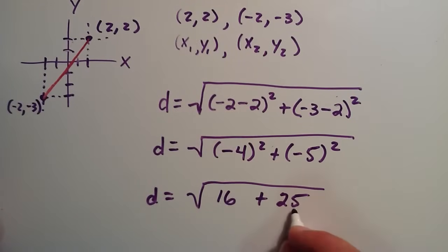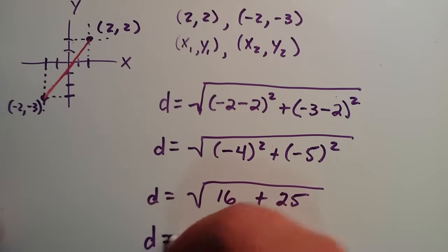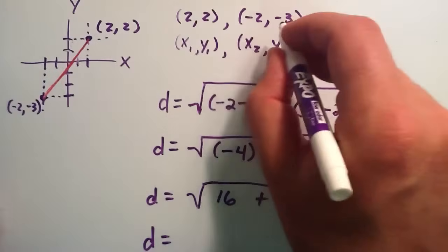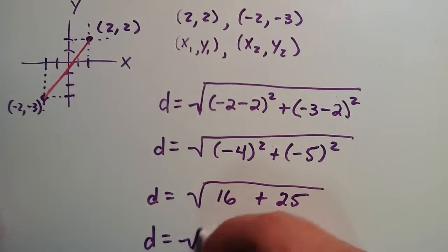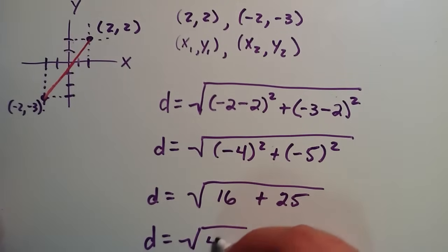And 16 plus 25 is 41. So the distance between the point (2,2) and (-2,-3) is simply square root of 41.